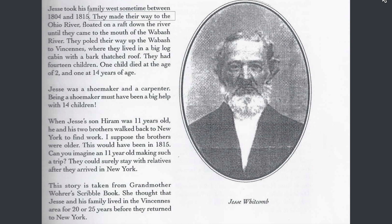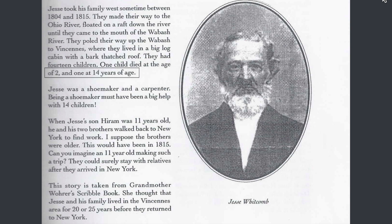Back to Jesse's story — they made their way to the Ohio River, floated on a raft down the river until they came to the mouth of the Wabash River. They pulled their way up the Wabash to Vincennes, where they lived in a big log cabin with a bark-thatched roof. They had 14 children, which seems to match that huge list that we have — I only have 13 children listed, but that could be explained by this sentence: 'One child died at the age of two and one at 14 years of age.' It also mentions that Jesse was a shoemaker and a carpenter.